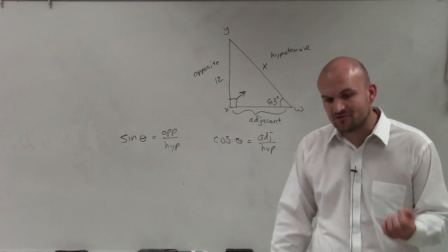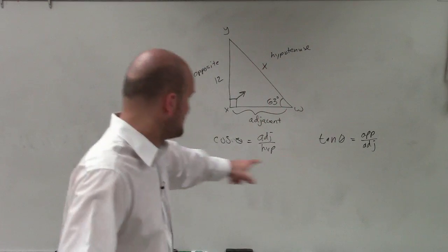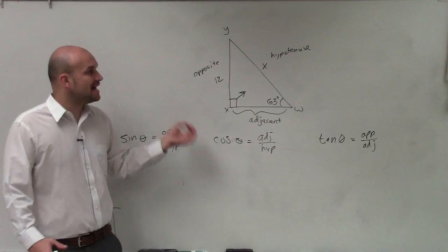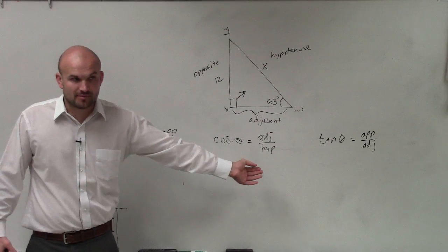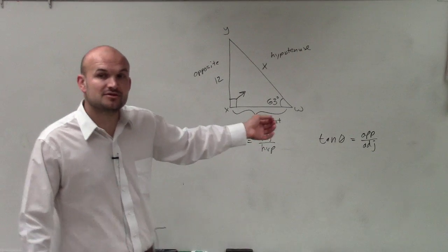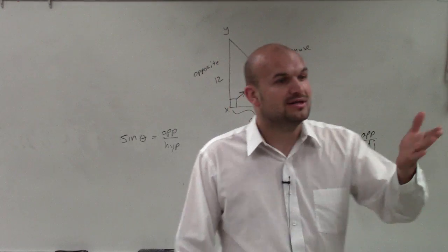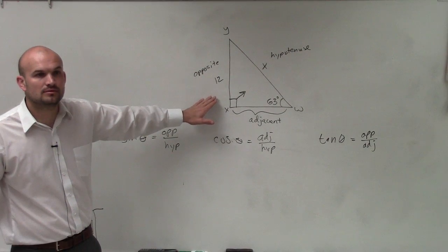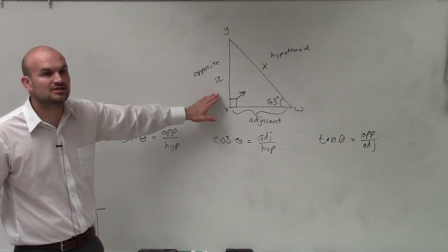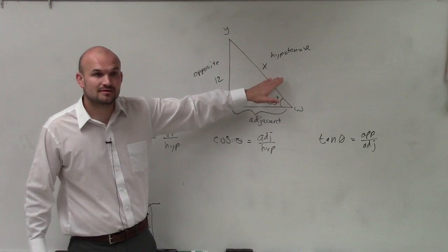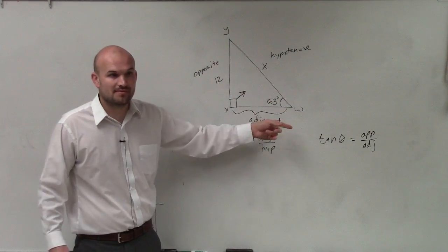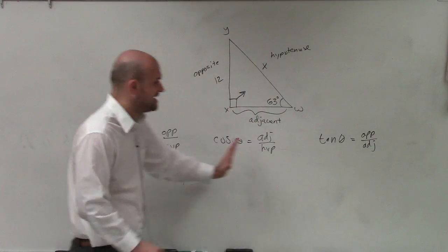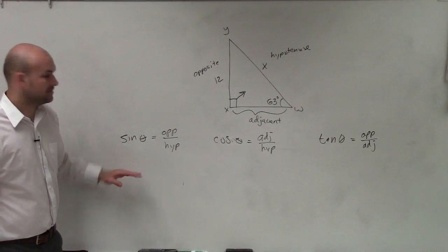So we are provided an angle which would represent our theta, and we're also provided two sides of the triangle. One as a number and one as a variable. And so by looking at those two as one is a variable, Dennis, what are we provided? What is our 12? Our 12 is what? What side is the 12? Adjacent, it's the opposite, and the x is? We don't have any adjacent, right? So Dennis, what is the only trigonometric function that deals with opposite and hypotenuse? The sine.